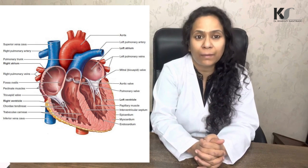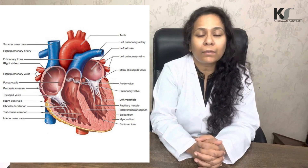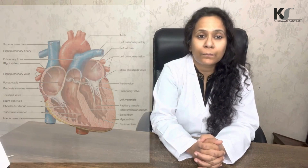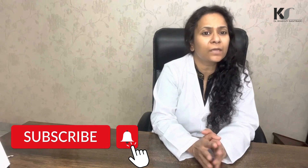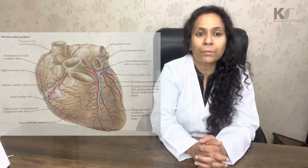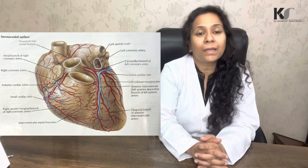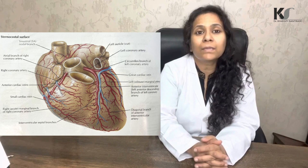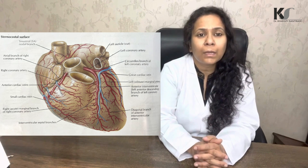The heart is supplied by the coronary arteries: the right coronary artery and the left coronary artery, both arising from the aorta. The right coronary artery supplies the right side of the heart — the right atrium, the right ventricle, the posterior one-third of the interventricular septum — and also supplies the SA node and AV node. The left coronary artery supplies the left atrium, the left ventricle, part of the right ventricle, the SA node, and the anterior two-thirds of the interventricular septum.